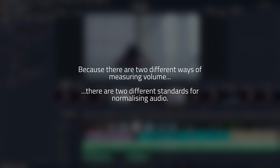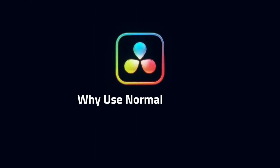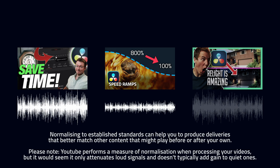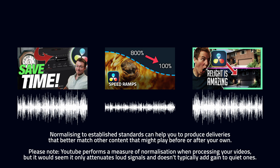In summary, because there are two primary methods for measuring volume — intensity and loudness — there are two different standards that you can normalize audio to. Normalization helps you deliver mixes with more consistent volume or loudness levels. Even if your video sounds good in isolation, it might be too loud or too quiet compared to videos that come before and after it. Normalization can prevent you from delivering mixes that are either too quiet or too loud.